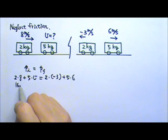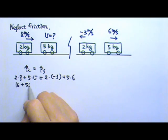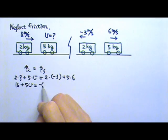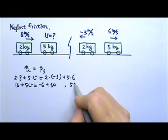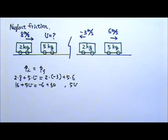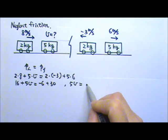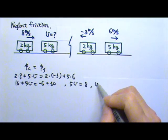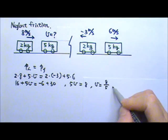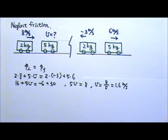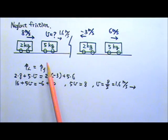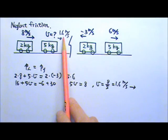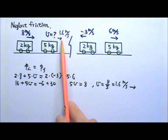The 5kg cart's final momentum is 5 times 6. This gives us 16 plus 5v equals negative 6 plus 30. Subtracting 16 from both sides gives 5v equals 8, so v equals 8 divided by 5, which is 1.6 meters per second. This positive value means the 5kg cart was traveling to the right before the collision.